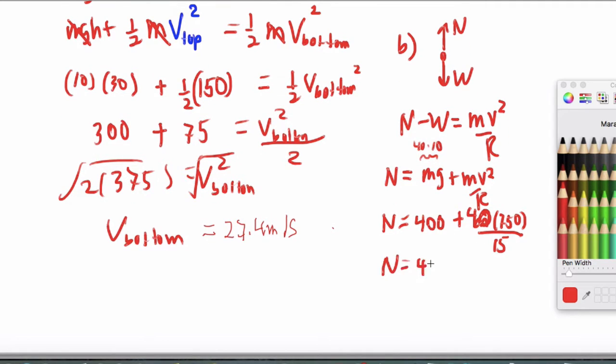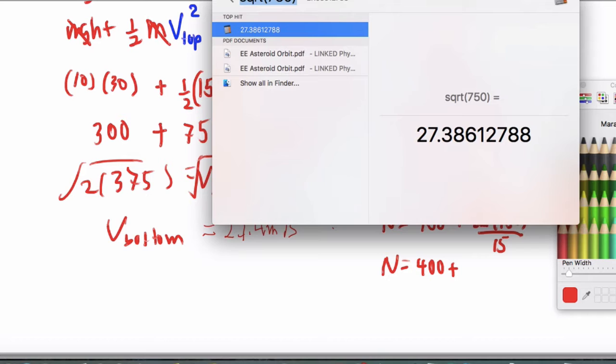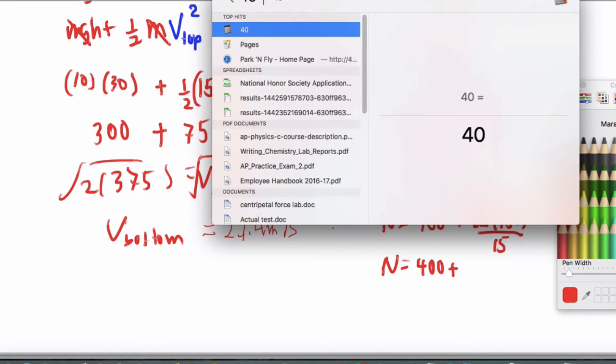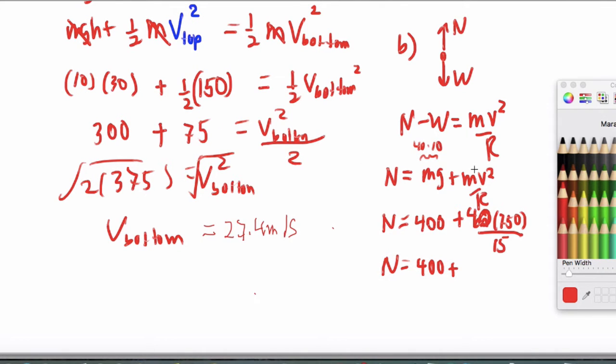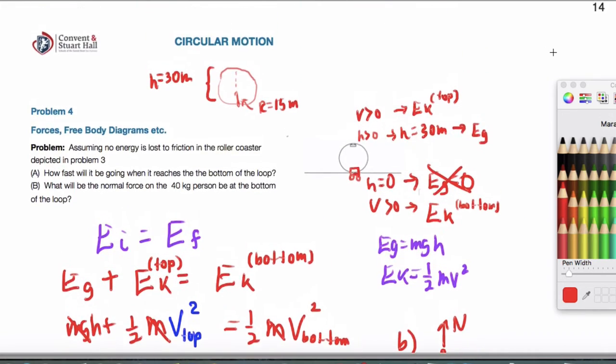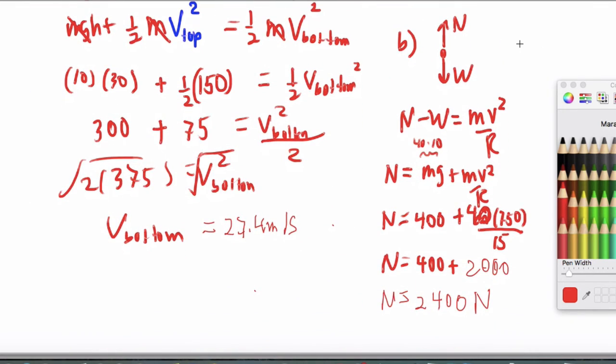So the normal is going to be 400 plus 2,000. So I'm getting a normal force of 2,400 newtons. So that's part B of the problem.